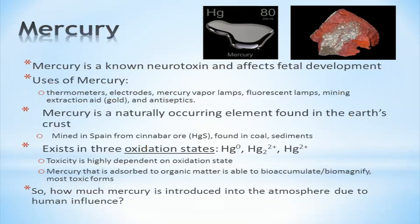Mercury is a known neurotoxin and affects fetal development. It is mostly used in thermometers, electrodes, mercury vapor lamps, fluorescent lamps, antiseptics, and as a mining extraction aid. Mercury is a naturally occurring element found within the Earth's crust, and is refined to the elemental state from cinnabar ore found in veins created by recent volcanic activity. Mercury is also found in trace quantities in coal and sediments.